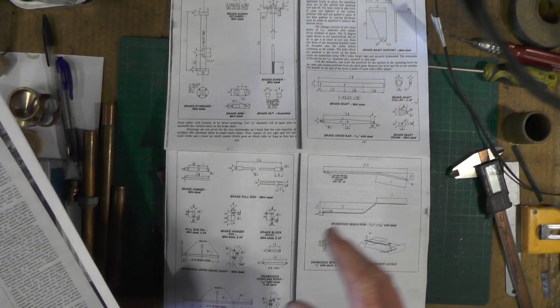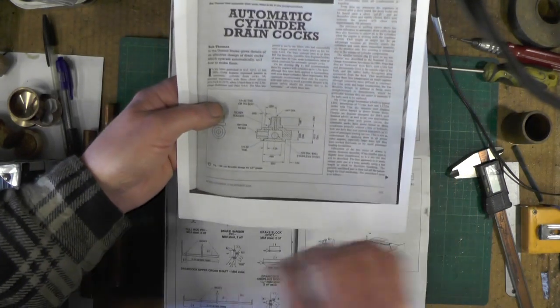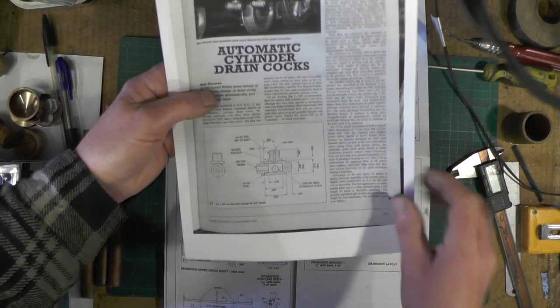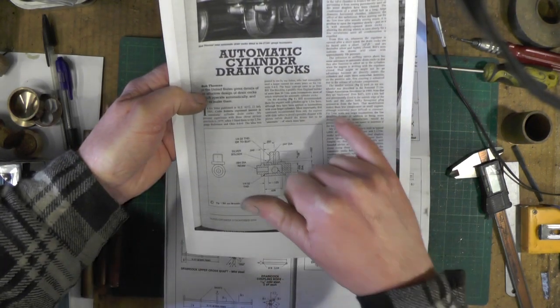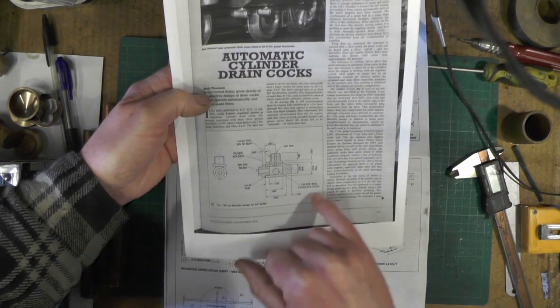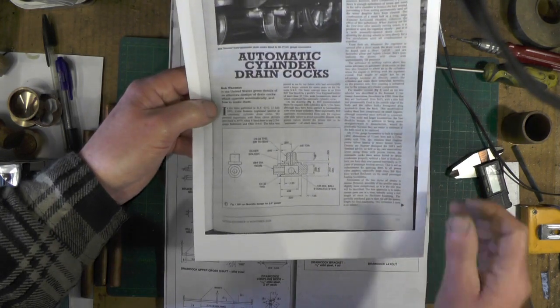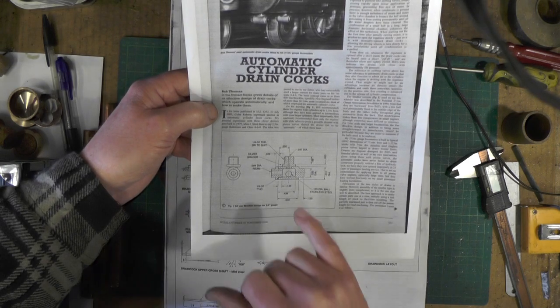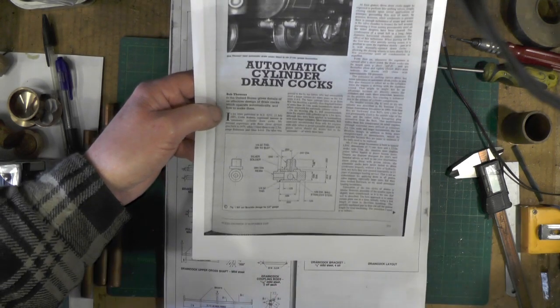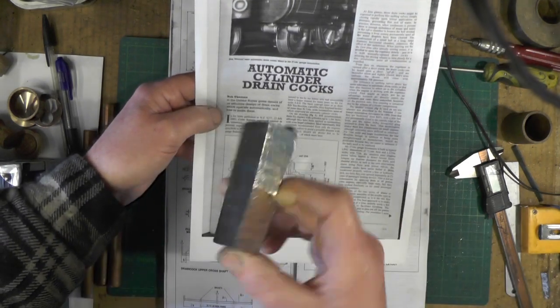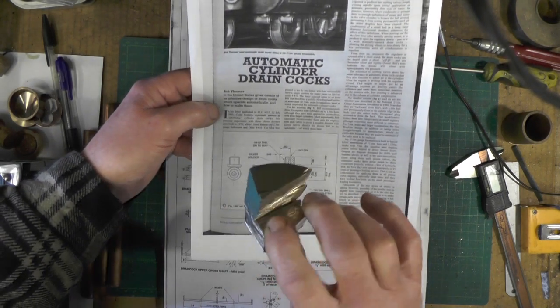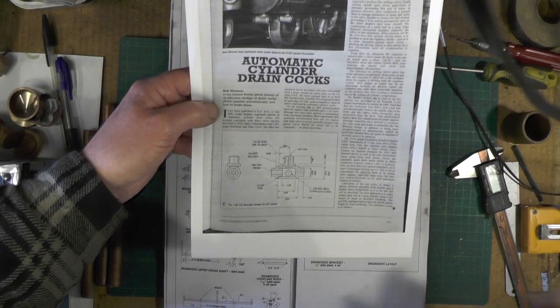In Model Engineer, November 10th, 2006, there's this automatic drain cock drawing. I think I'm going to use this drawing to make my drain cocks. I'm using some phosphor bronze which I'm hacking away at - these off-cuts which I've shown you a few times before.